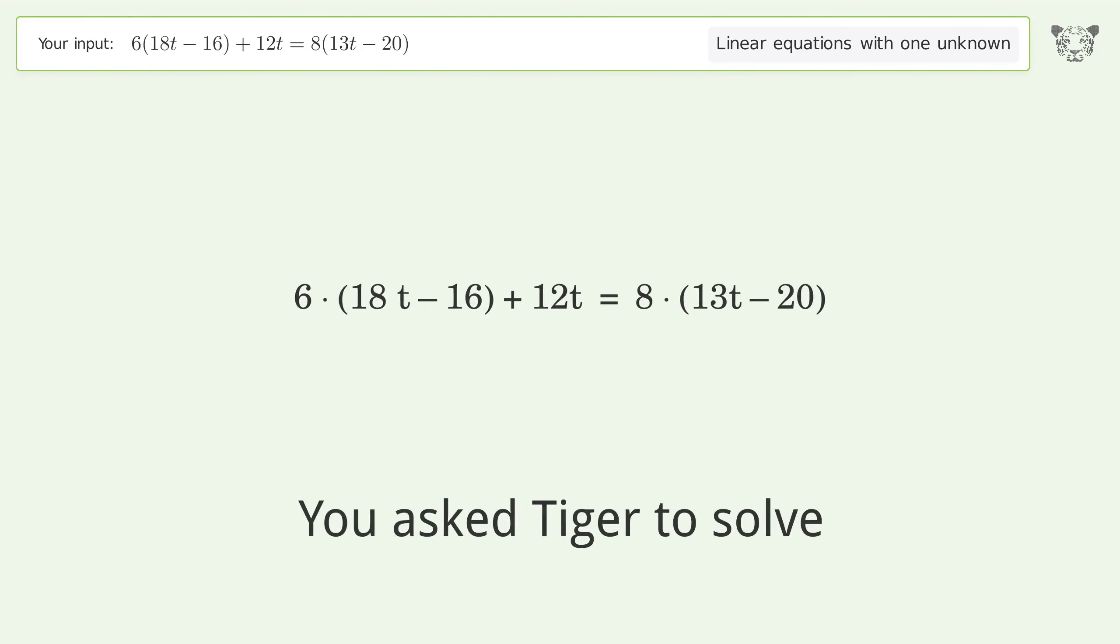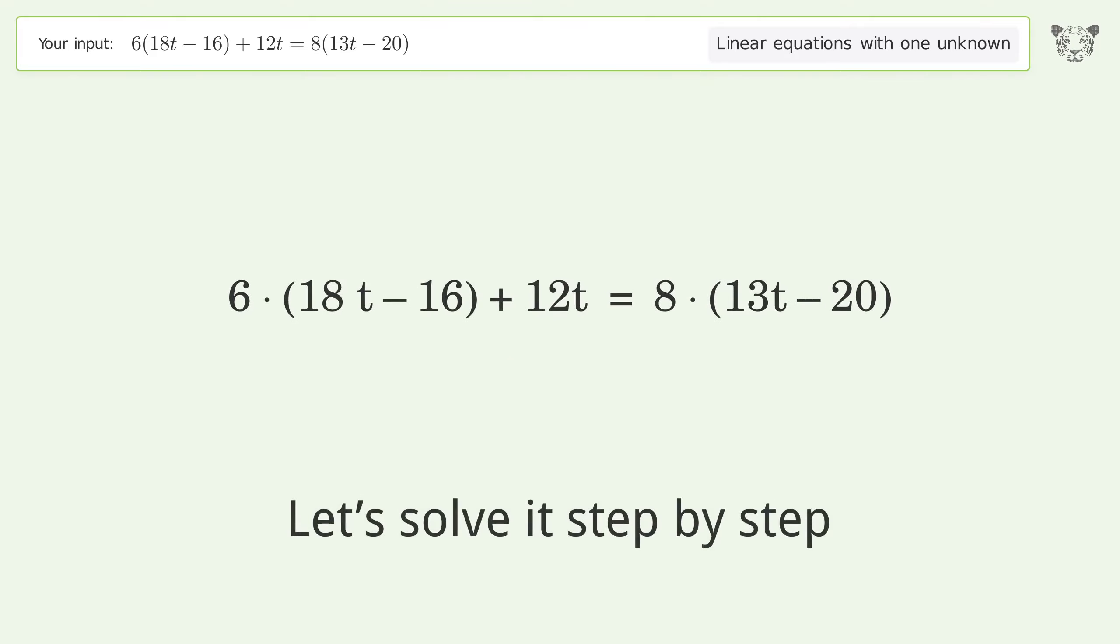You asked Tiger to solve this, which deals with linear equations with one unknown. The final result is t equals negative 4. Let's solve it step by step. Simplify the expression.